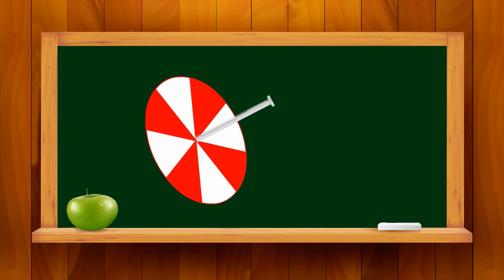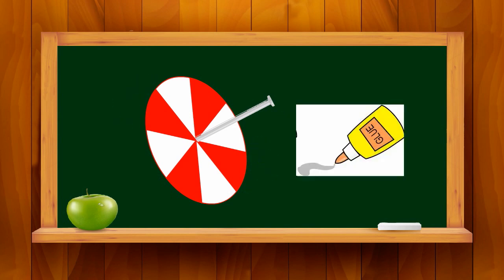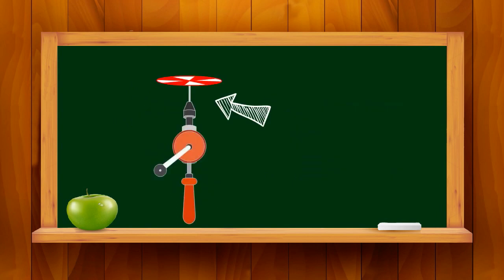Force a nail through the center of the circular disc so that the cardboard cannot turn unless you turn the nail. If necessary, you can glue the nail. Insert the nail into the chuck of the hand drill.